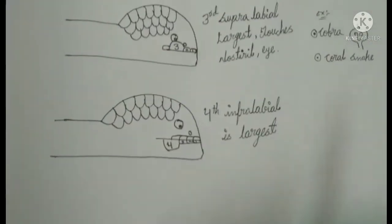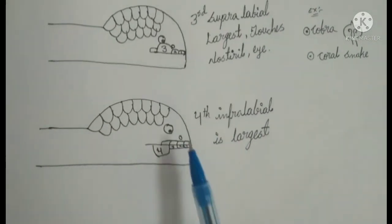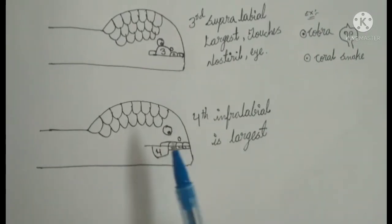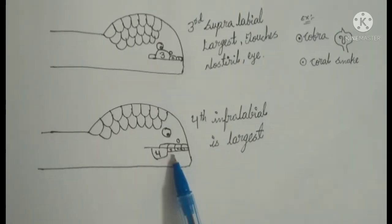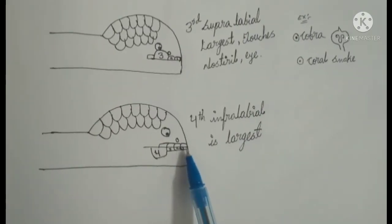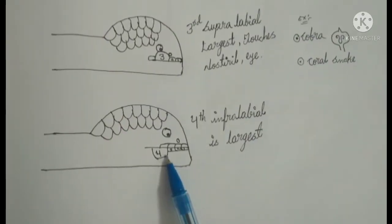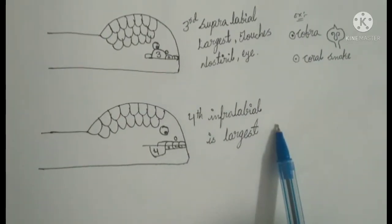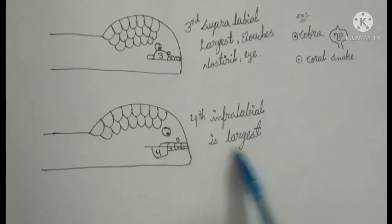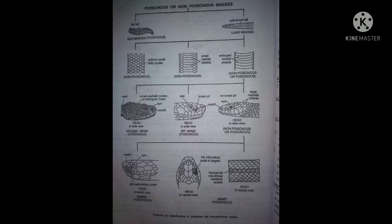First, we have large scales. We are using loreal pit. Infralabial scales. If you are using welche, we are using the three scale. This is the first one. Now we are going to be able to do this with Vishapurthapamil and Visharaythapamil.